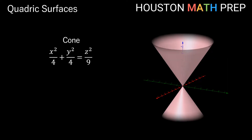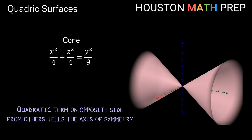If we change the equation so that the values for a and b on the left side are equal, we get a round circular cone instead of an elliptical one. If we want our cones to open in a different direction entirely, we change which quadratic term is alone on the right side — that term determines the axis of symmetry. So if y² is alone, the y-axis is the axis of symmetry and the cones open in the y directions.